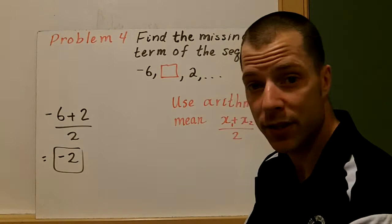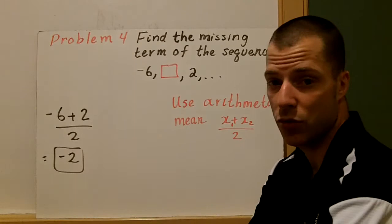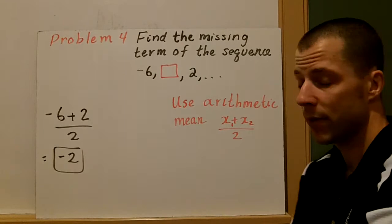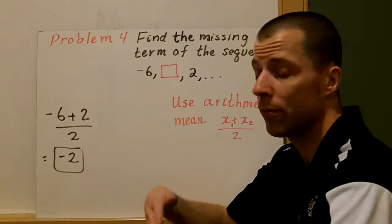Find the missing term. We're given negative 6, a blank, and 2, and need to find the value in the middle. We use the arithmetic mean: add the two terms and divide by two. Negative 6 plus 2 divided by 2 equals negative 2. So the missing term is negative 2. That is arithmetic sequences.